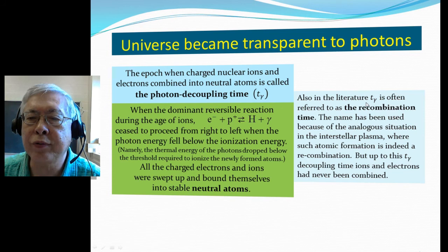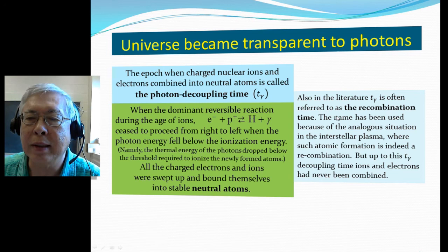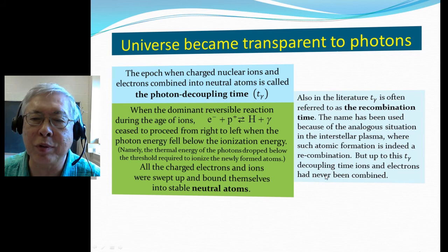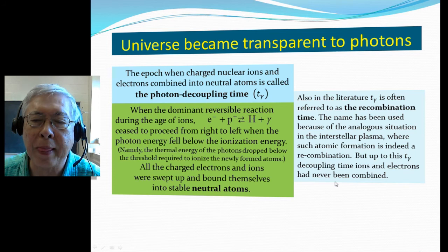In the literature, this photon decoupling time is also called the recombination time. The name has been used because of the analogous situation in interstellar plasma, where such atomic formation is indeed a recombination. But up to this point, at photon decoupling time, ions and electrons have never been combined before, so the name recombination is a little bit misleading.